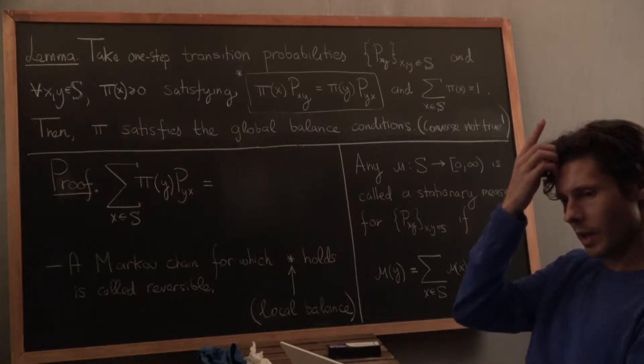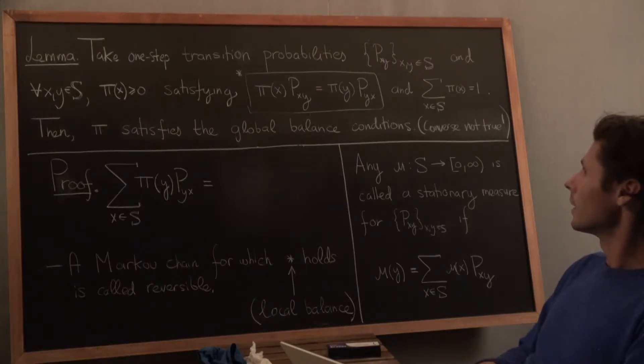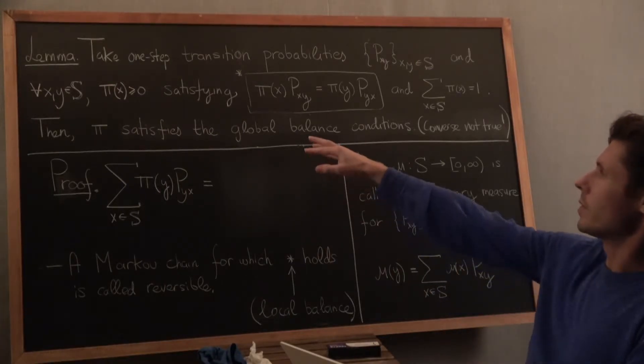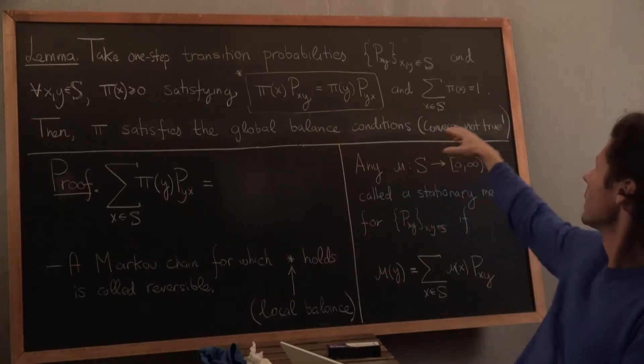So let me just start out by reading what we have. We're once again starting out with these one-step transition probabilities, P_xy. And we also have this pi, which is a distribution. You can see that because it's not negative and sums to 1.